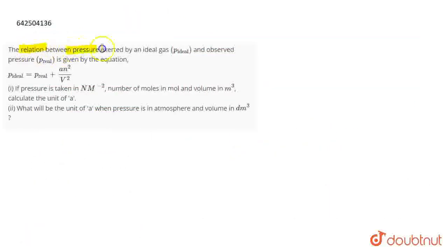The question is: the relation between pressure exerted by an ideal gas, which is P ideal, and observed pressure, which is P real, is given by the equation.